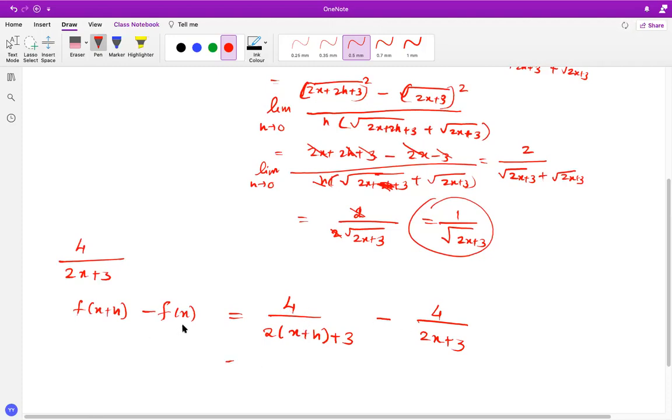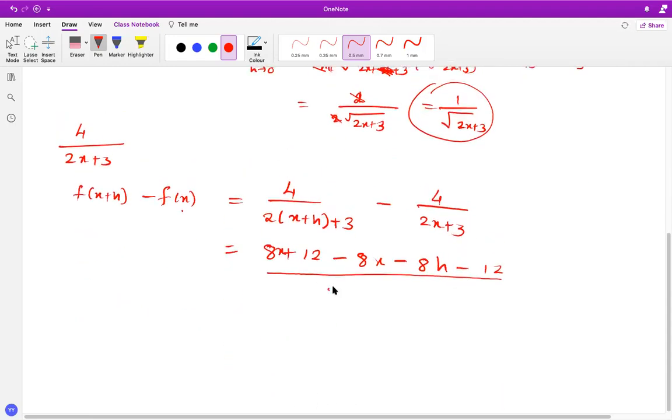So this is f of x plus h minus f of x. So, then you can just quickly take the LCM. So it's going to become 8 plus 12x, 8x plus 12 minus, if you open this, it's going to be minus 8x minus 8h minus 12 over, 2x plus 3, in one bracket and other bracket is this, which is 2 times x plus h and plus 3. Alright. So this 8x and 8x get cancelled, 12 and 12 get cancelled.